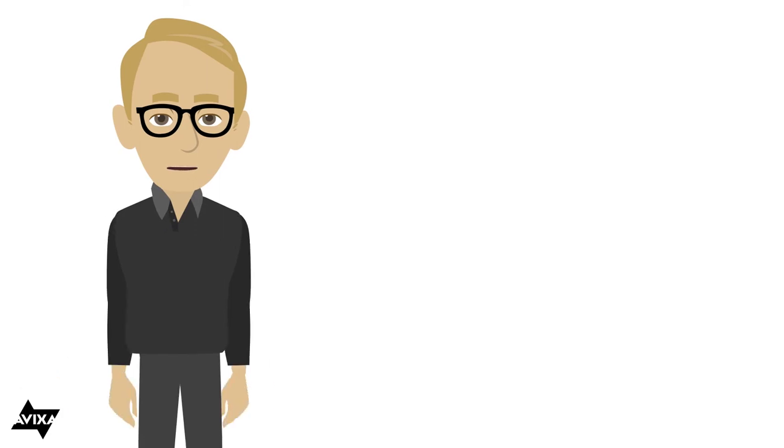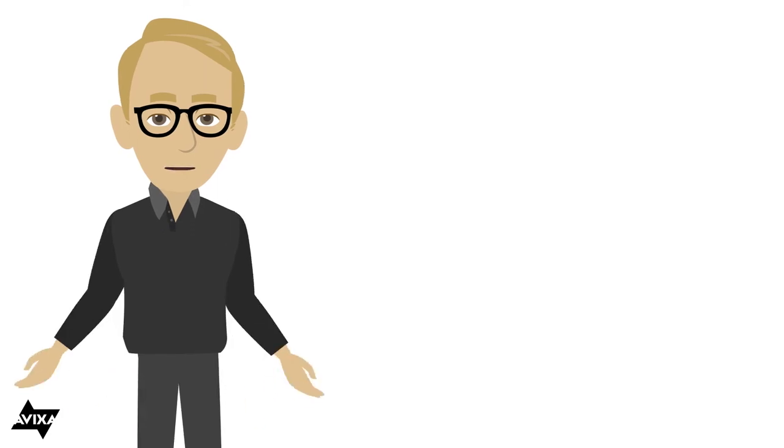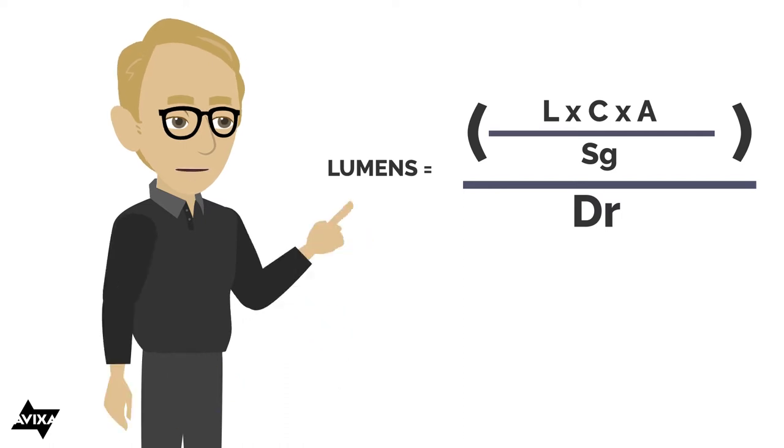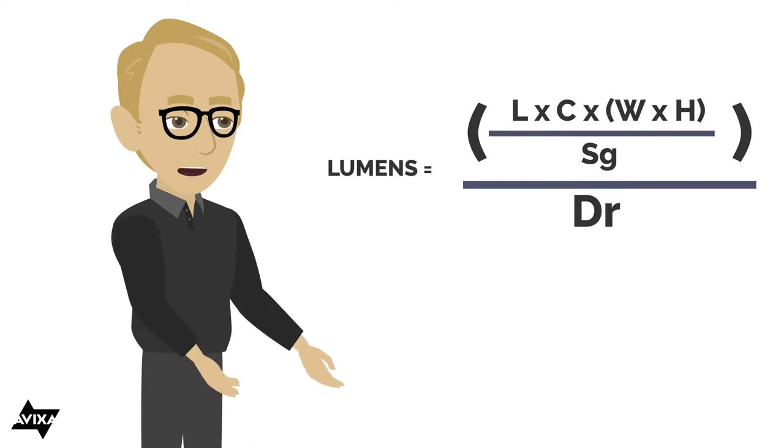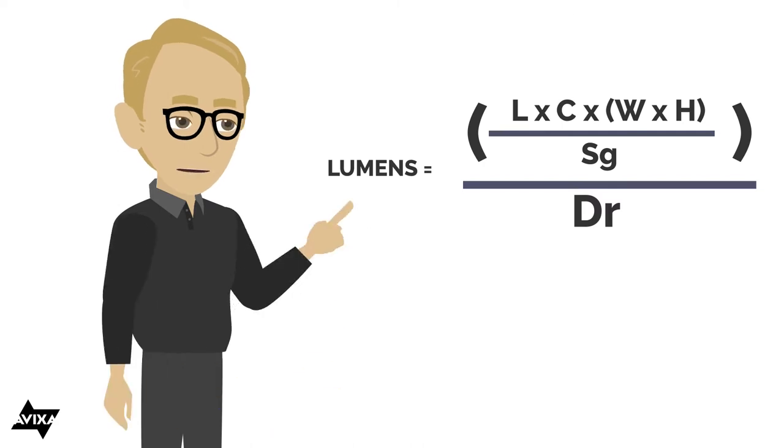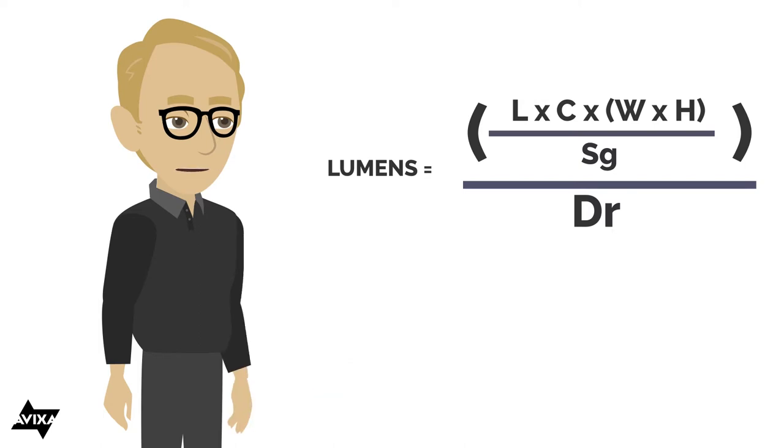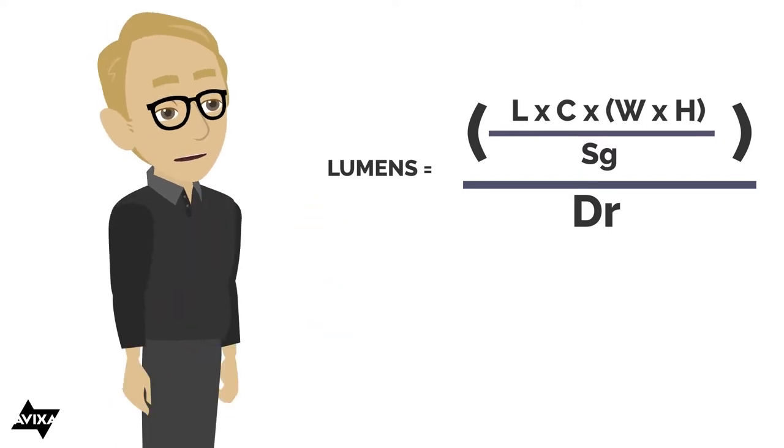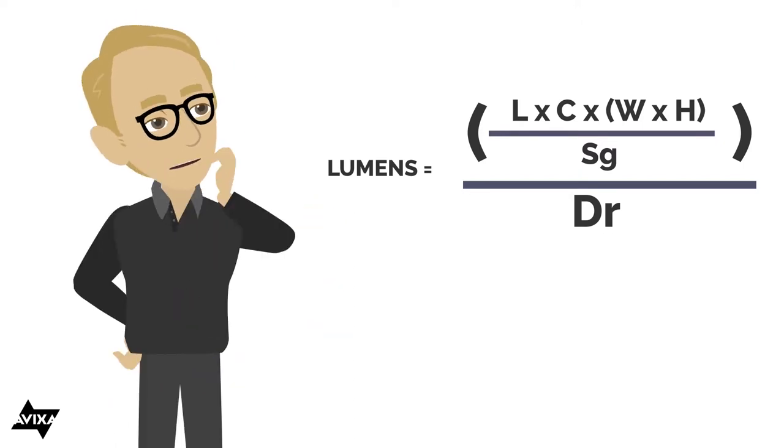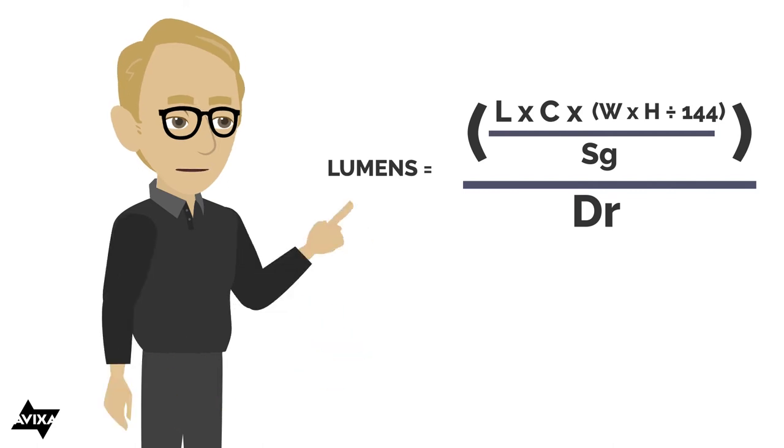So now that we know how to calculate for the area, let's take another look at our formula. So I started off with the amount of ambient light times the contrast ratio times the area of the screen, divided by screen gain, divided by the derating percentage. Let me expand on that area here in the formula and I'm just going to do width times height. And if we're doing U.S. customary, that's going to be in inches, give me square inches, but I still need to convert that to square feet. So I could expand that even a little more. Light, the amount of ambient light times contrast ratio times the width times the height divided by 144, there's my conversion, divided by the screen gain, divided by the derating percentage.